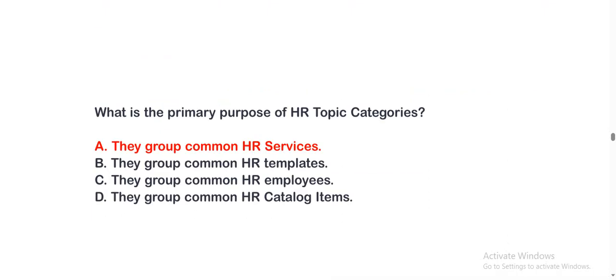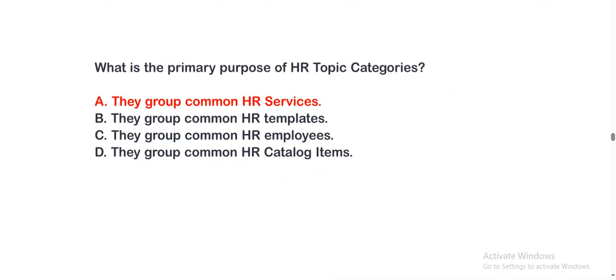What is the primary purpose of HR topic categories? Option A: they group common HR services. Option B: they group common HR templates. Option C: they group common HR employees. Option D: they group common HR catalog items. The correct option is A.